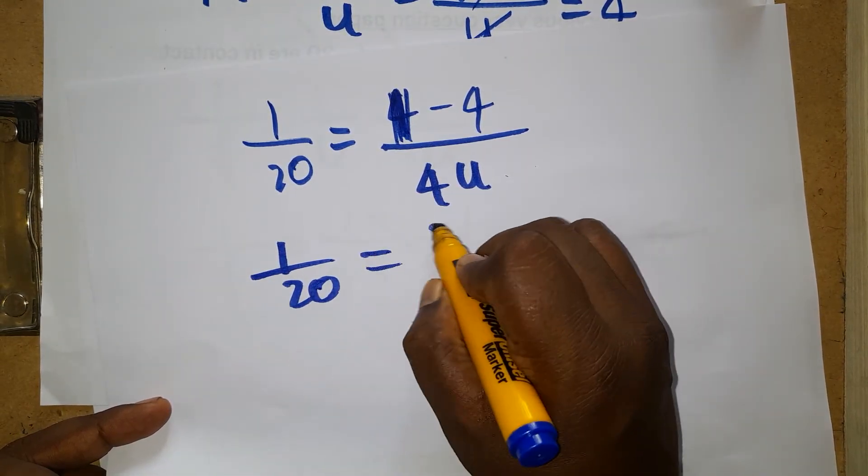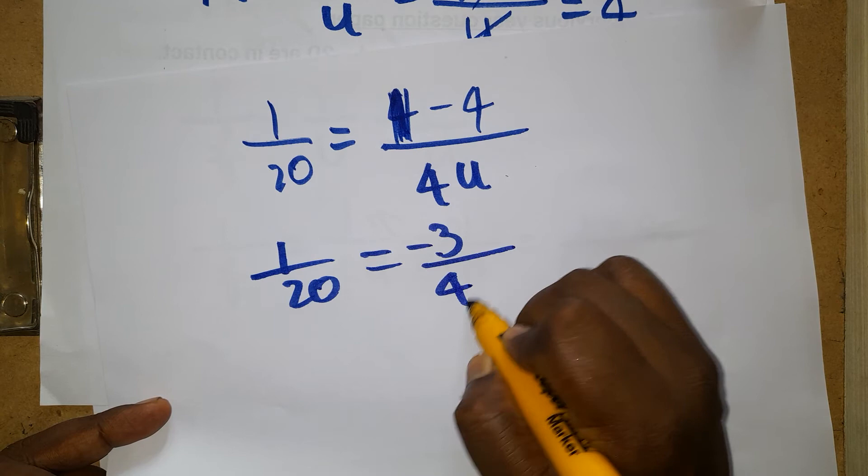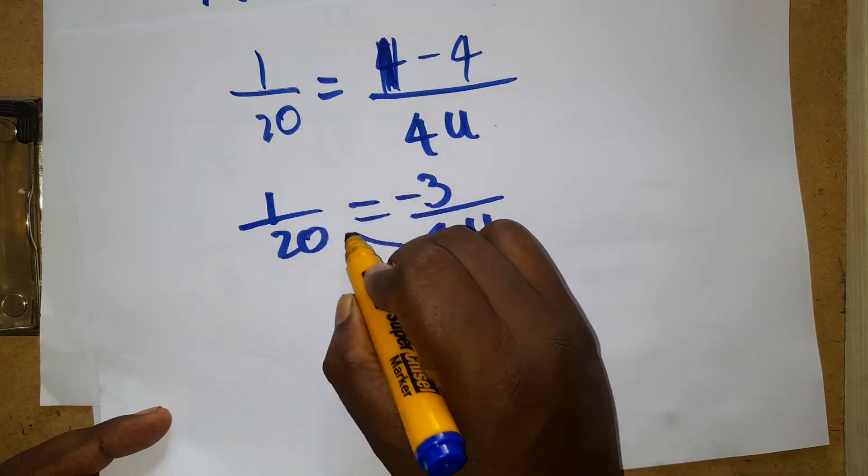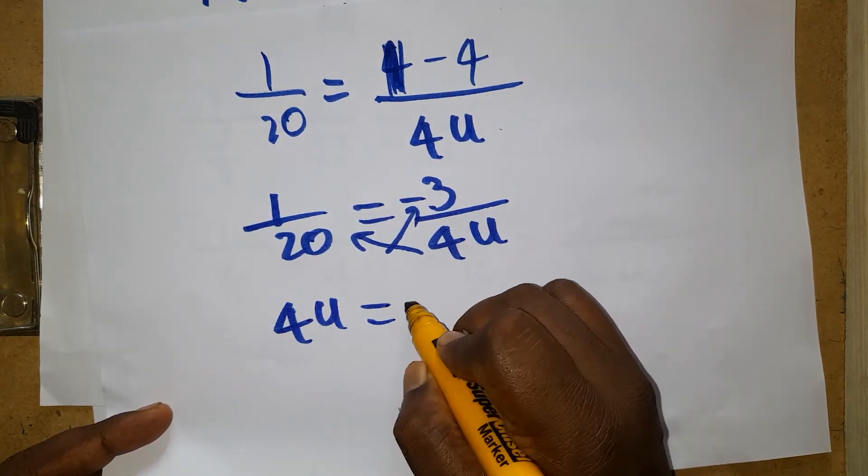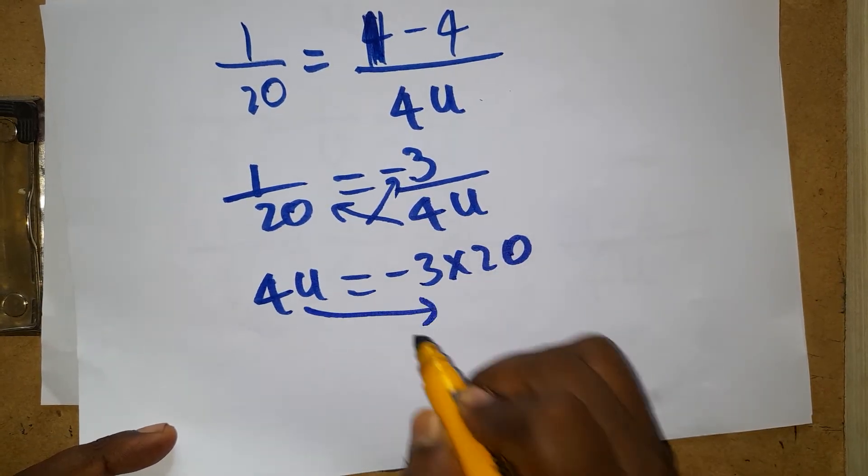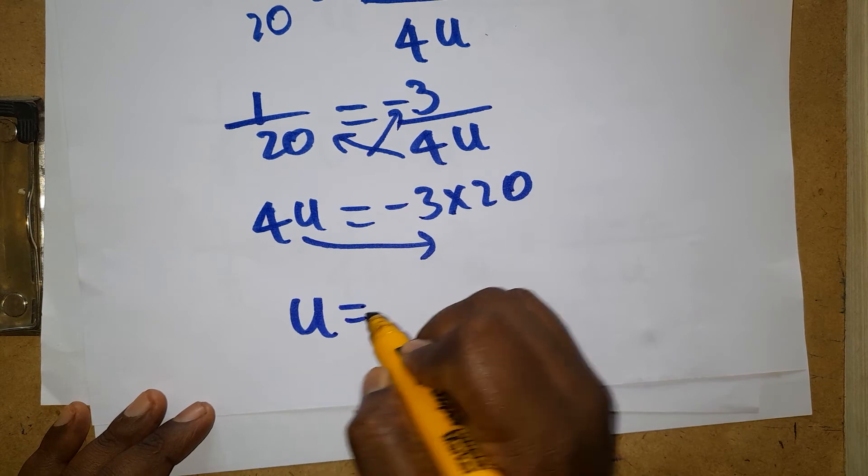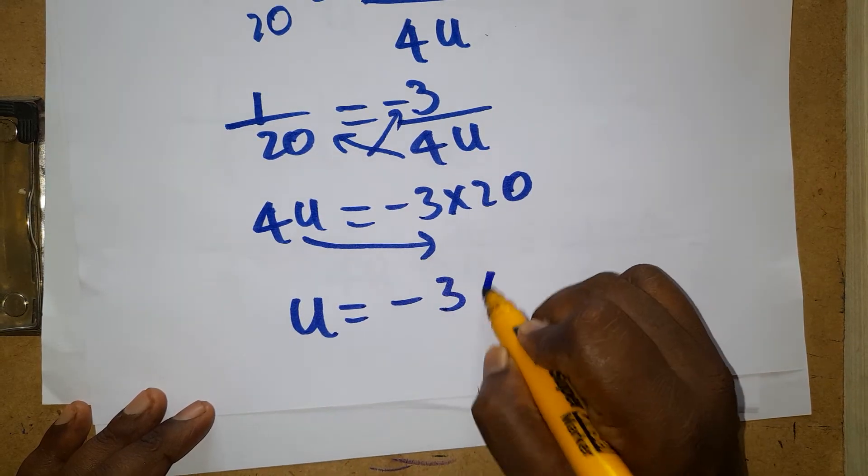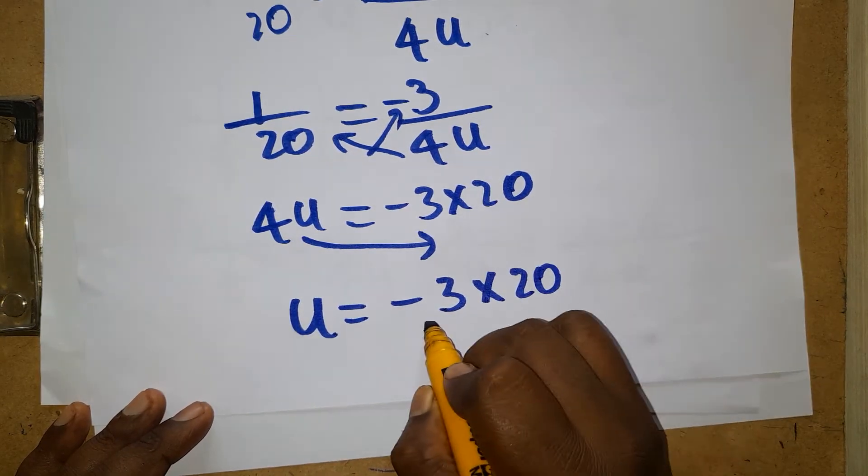So 1 divided by 20 equals minus 3 divided by 4u. Now just cross multiplication. 4u is equal to minus 3 into 20. This 4 again you can bring as a denominator. u is equal to minus 3 into 20 divided by 4.